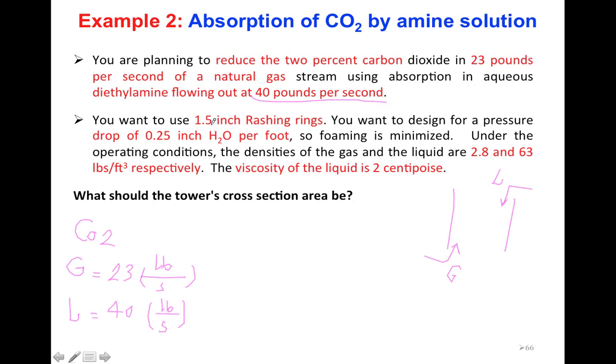We want to use 1.5 inch Rasching rings. We want to design for a pressure drop of 0.25 inch of water per foot of packing, and foaming is minimized, so in this condition you won't have any foaming.